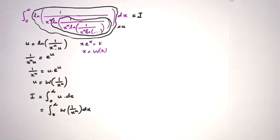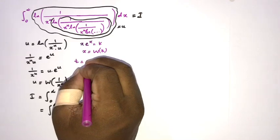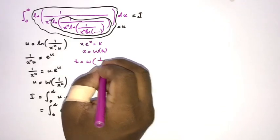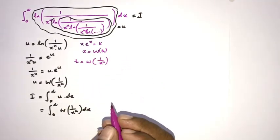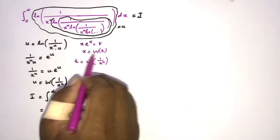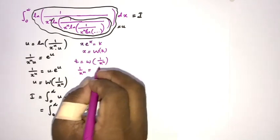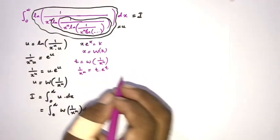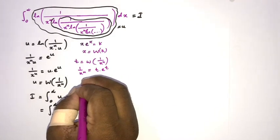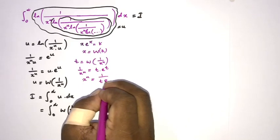To evaluate this integral I am going to use a substitution. We can take t equal to W of 1 over x to the n. Now isolating 1 over x to the n: we know 1 over x to the n is equal to t times e to the t. Then isolating x to the n gives x to the n equal to 1 over t times e to the t.